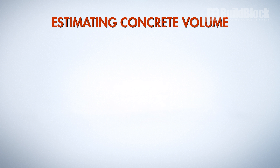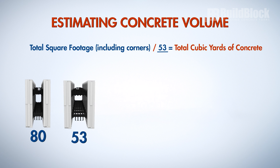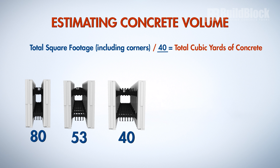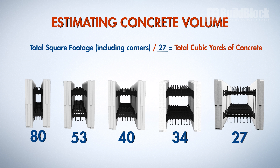Next, we'll estimate the amount of concrete needed. Divide the total footage of wall to be formed including corners by 80 for 4 inch forms, 53 for 6 inch forms, 40 for 8 inch forms, 34 for 10 inch forms, and 27 for 12 inch forms.